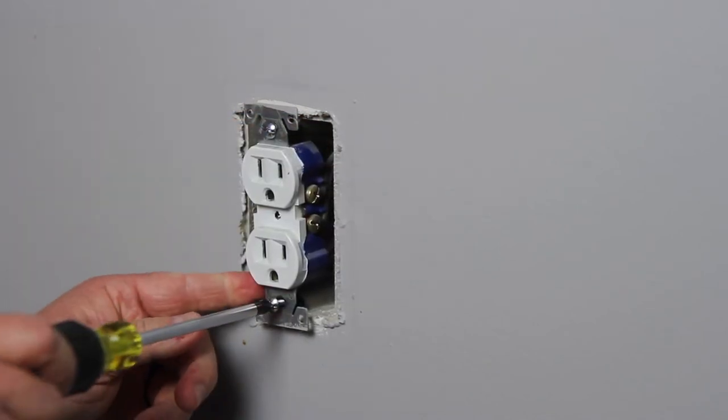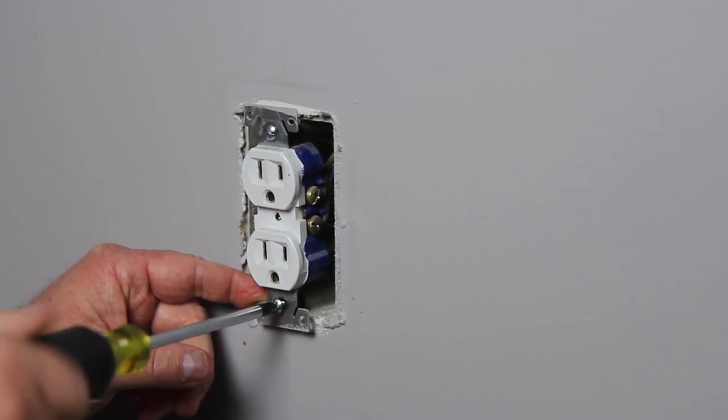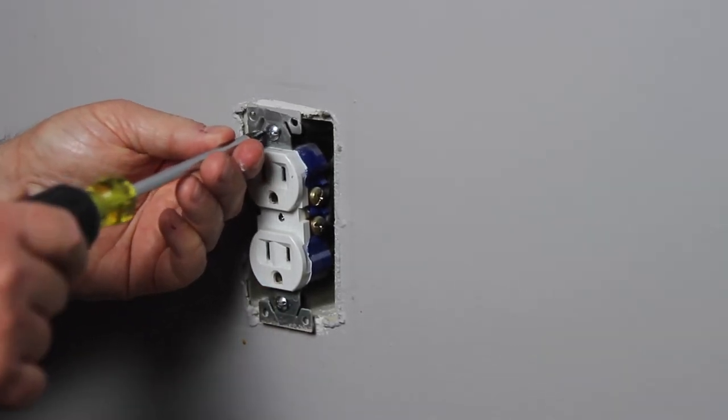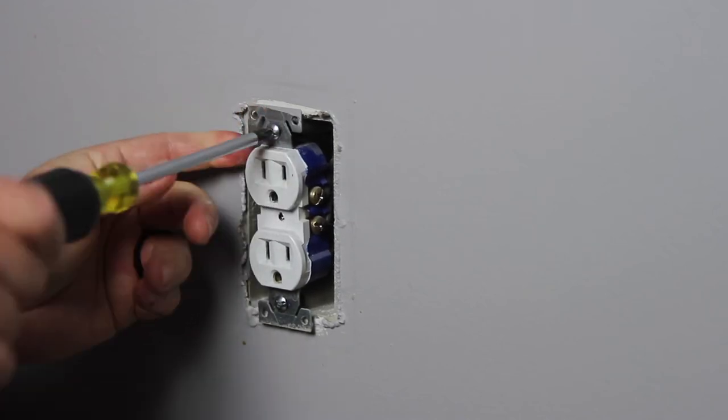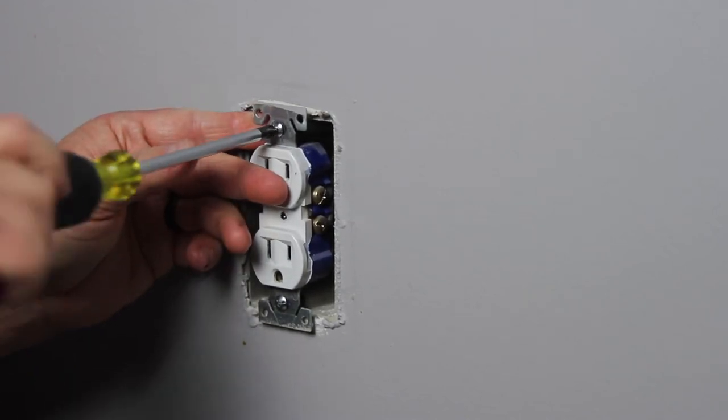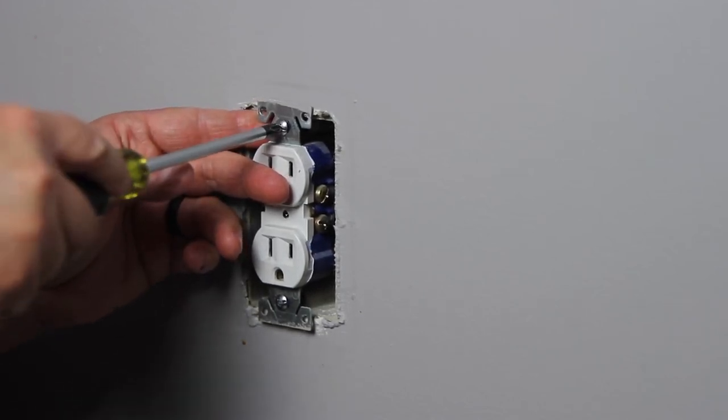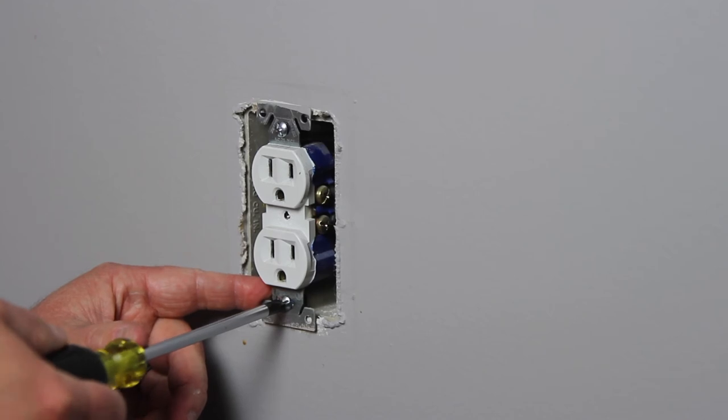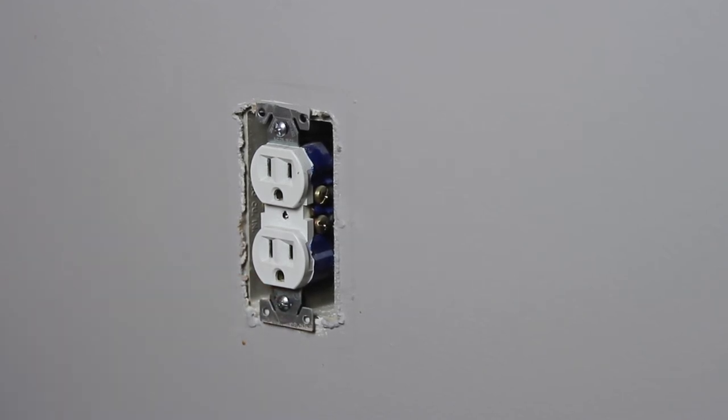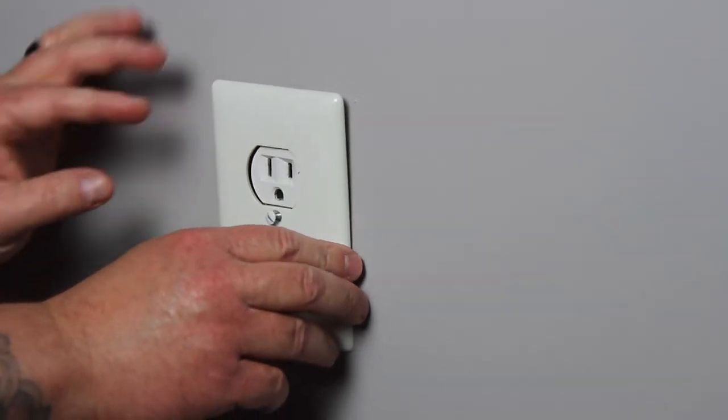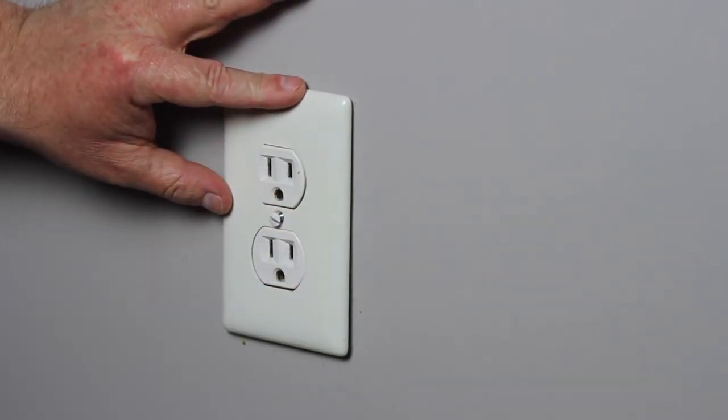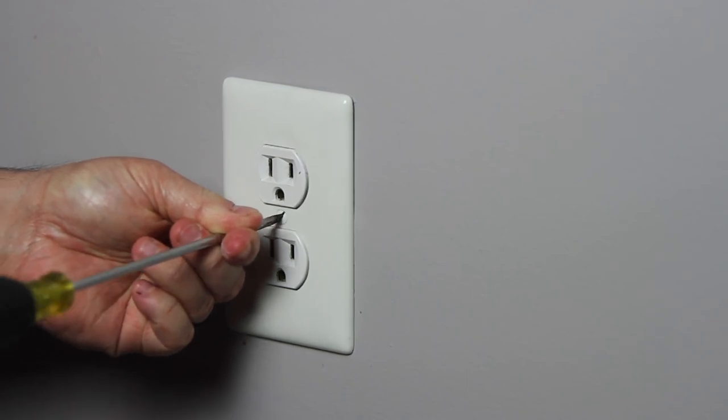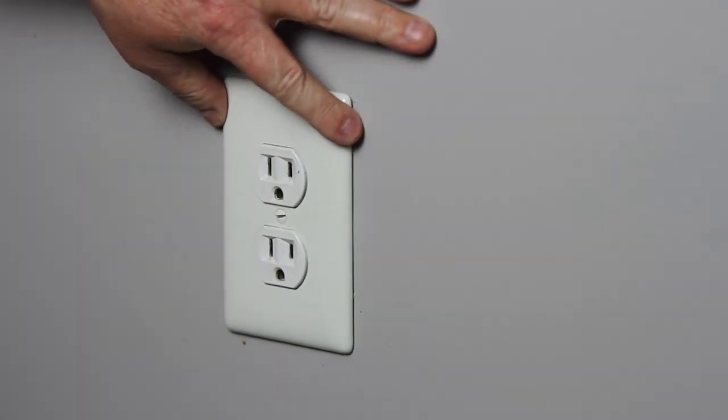We're going to go ahead and tighten the screws back up. All right. Then we can go ahead and put our outlet cover back on. And there we go. We've got that outlet tightened back up.